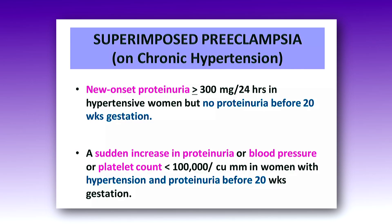The last classification is superimposed preeclampsia or eclampsia on chronic hypertension. There are two categories here. The first is new-onset proteinuria of more than or equal to 300 mg in 24 hours in a hypertensive woman with no proteinuria before 20 weeks of gestation. The second category is a sudden increase in proteinuria or blood pressure, or a platelet count less than 100,000 per cubic millimeter, in a woman with hypertension and proteinuria before 20 weeks of gestation.